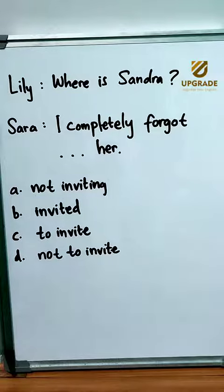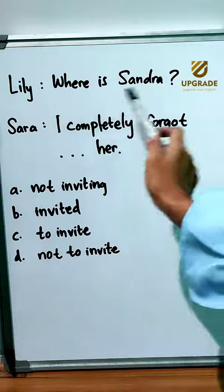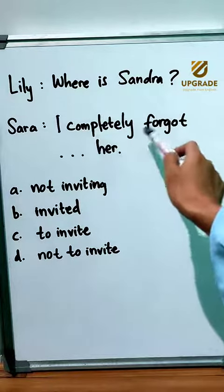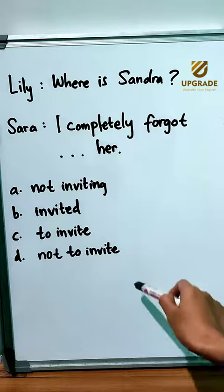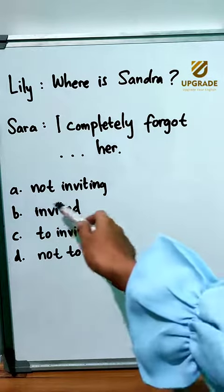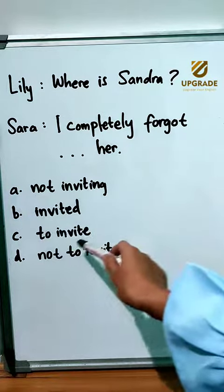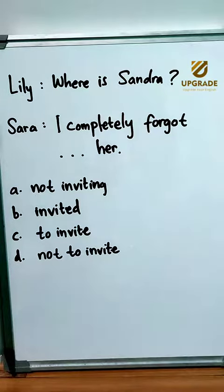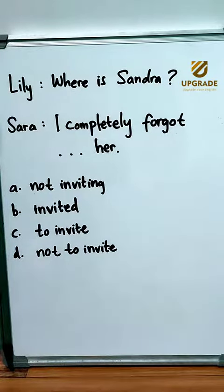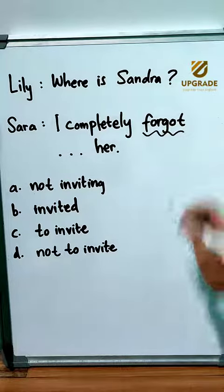Hello everyone, let's learn English today. We're going to practice one number. There's a dialogue here: 'Where is Sandra?' and the response is 'I completely forgot blank blank her.' Here are the following answers to choose from: A) not inviting, B) invited, C) to invite, and D) not to invite. First off, we need to analyze the word 'forgot.'